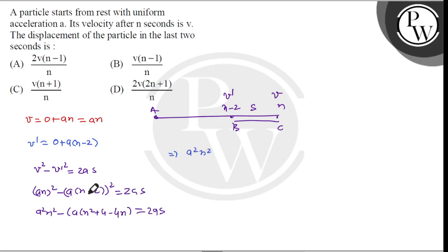When we take the square, a square n square minus a square n square minus 4 a square... So now we have a square n square and a square n square cancel.